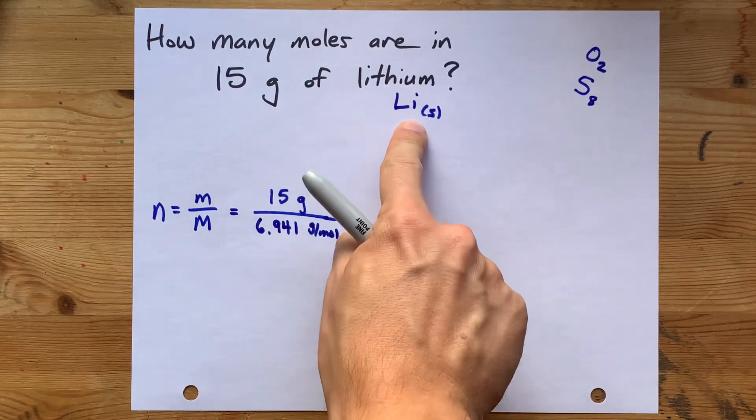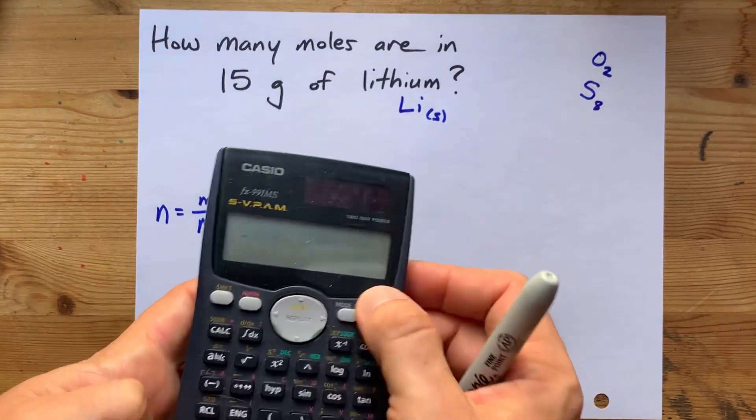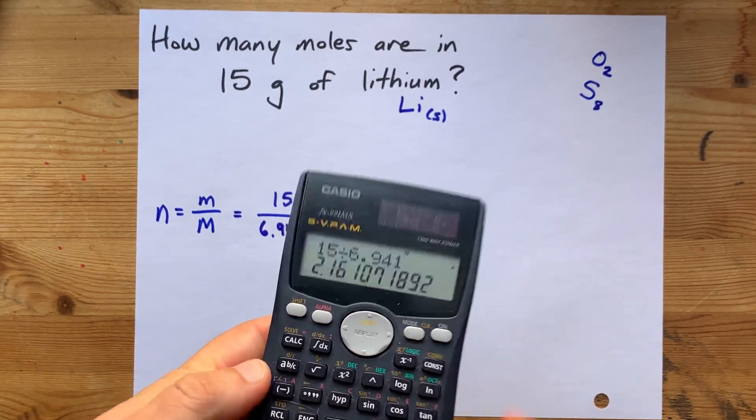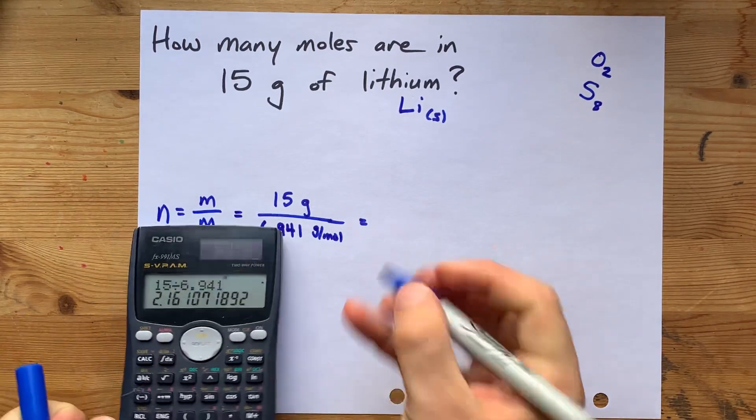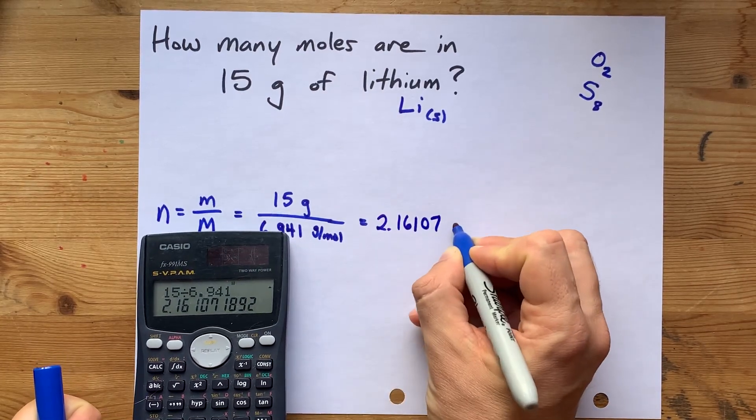Anyways, lithium is a metal, so it's easy. You just use it from the periodic table directly. Let's do 15 divided by 6.941. Bam. I get an answer of 2.16107 moles.